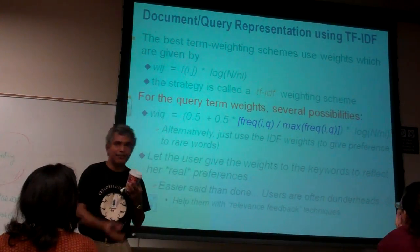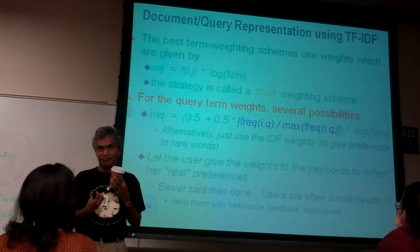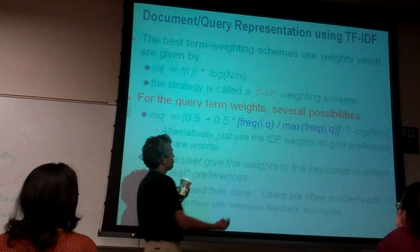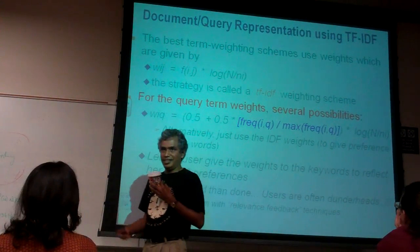So you add a 0.5 to any word that doesn't exist. So you start it off with a 0.5. Plus 0.5 times the TF.